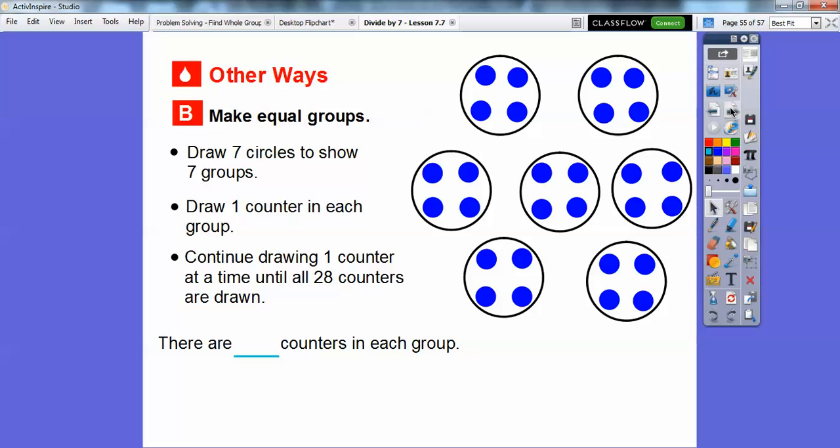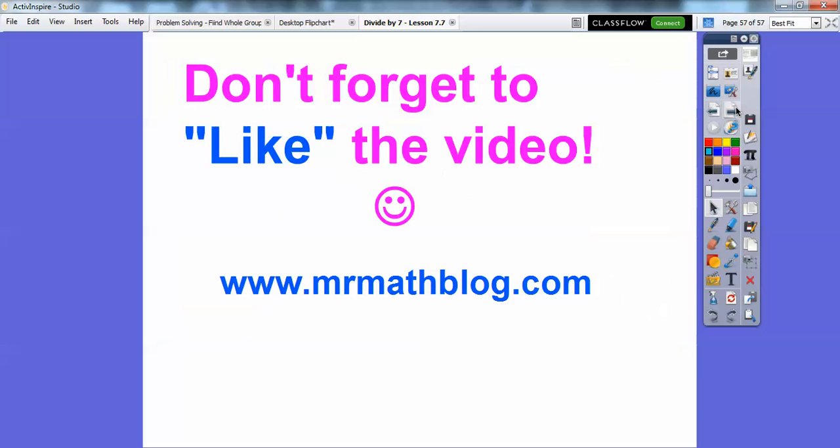So there are how many counters in each group after we gave out all 28 cookies or 28 counters? There's four counters in each group. So all those methods work. All right, you guys, I hope that helps.